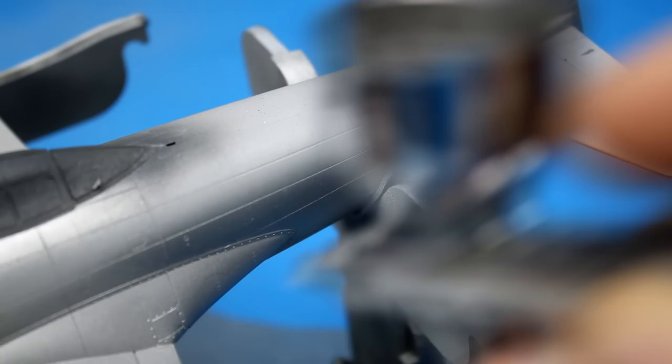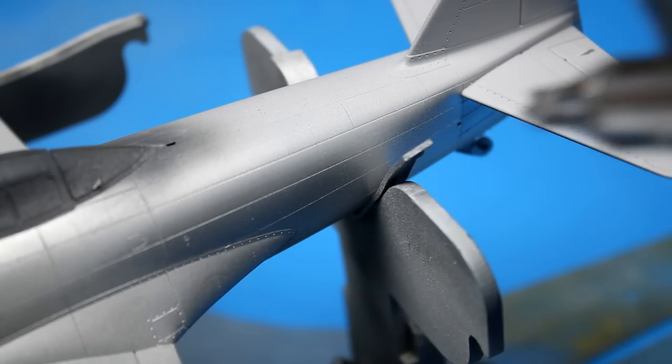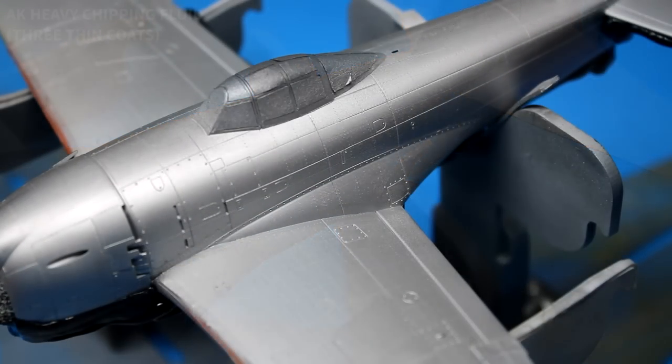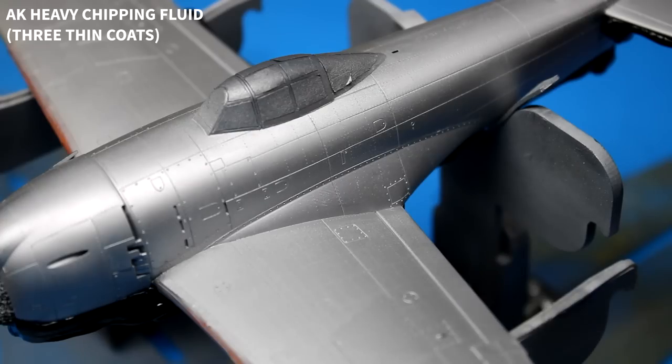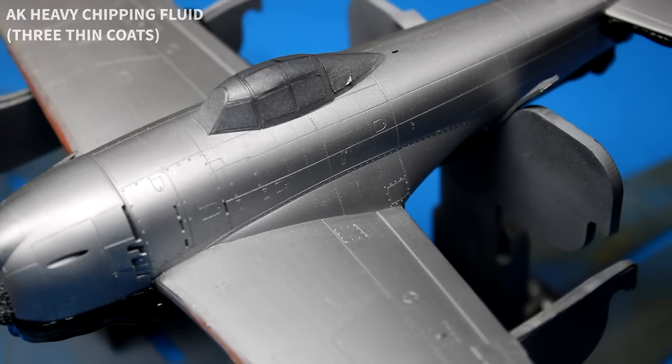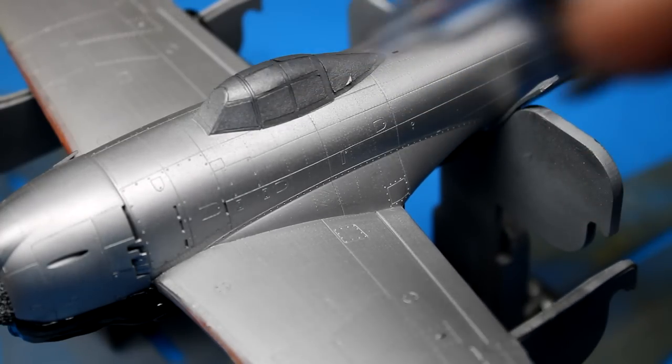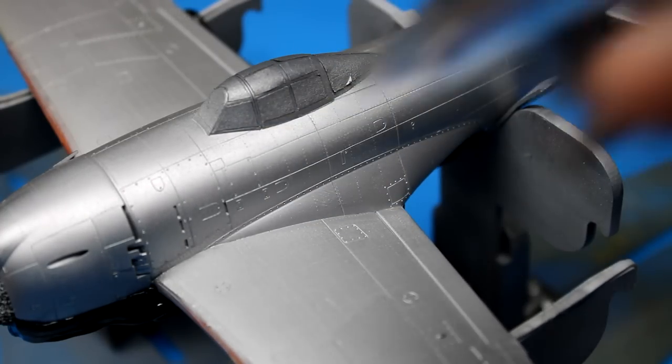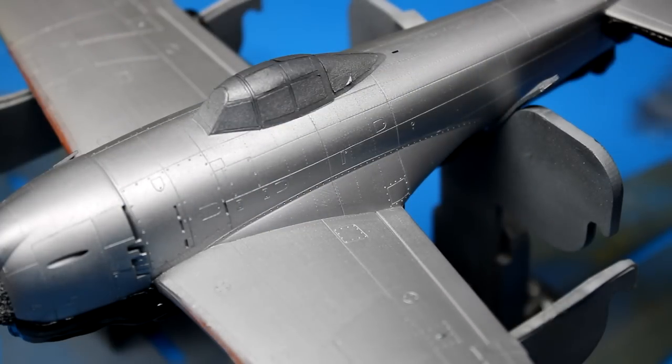Once the colors were down on the cockpit and the leading edges, I then painted the entire model Mr. Metal Color aluminum. And my plan was to mask the bottom with AK masking putty. But the problem with that putty is if you put it on a metallic paint like this, it does a little bit of damage as you pull it off. So just be aware before you do that. You might want to seal it in clear.